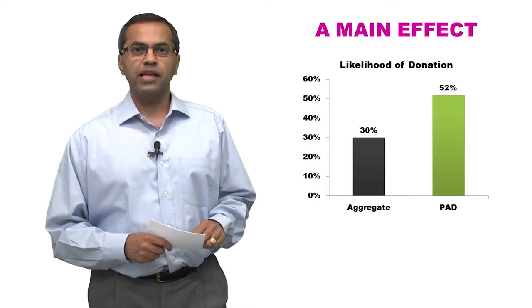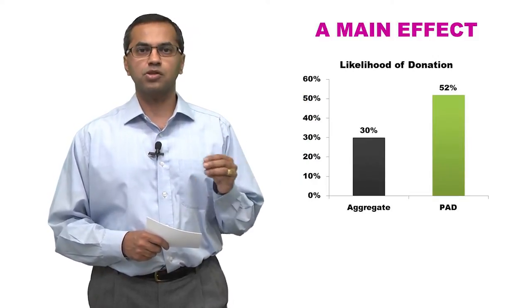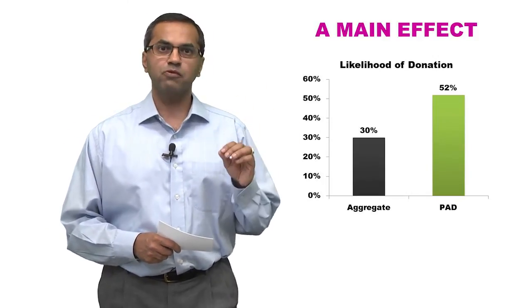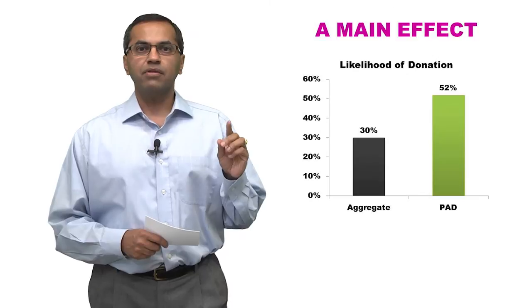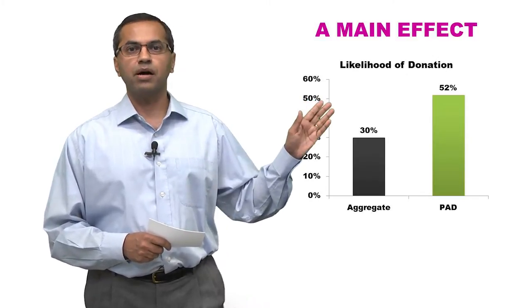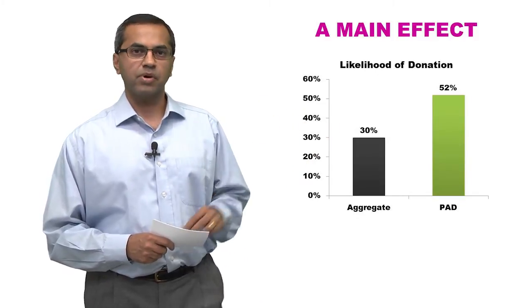Here's what Goreville found. He found that when people saw the same amount expressed as dollars-a-day, they were much more willing to donate than when they saw the aggregate frame. And in fact, what you'll see is that the green bar, in this case representing pennies-a-day, is taller than the gray bar.